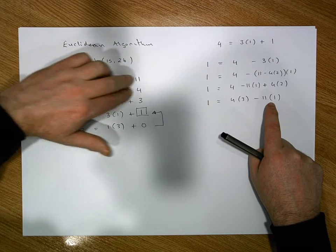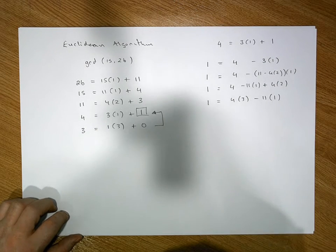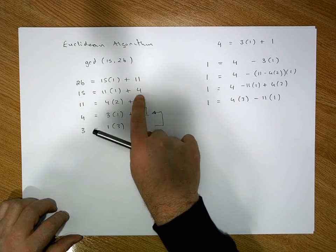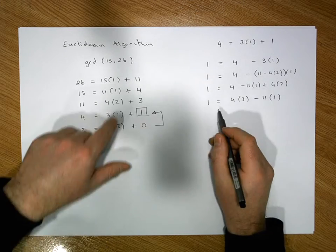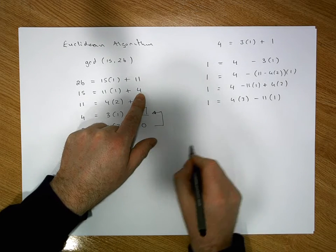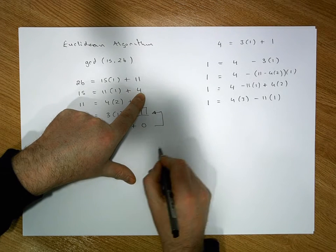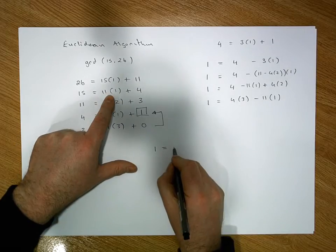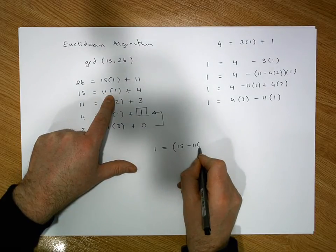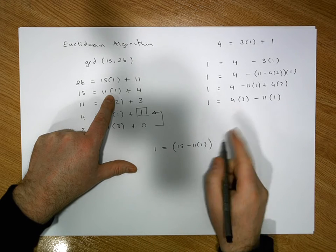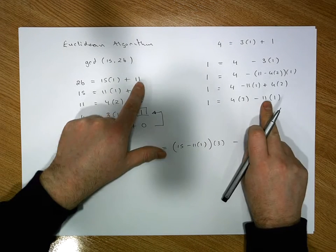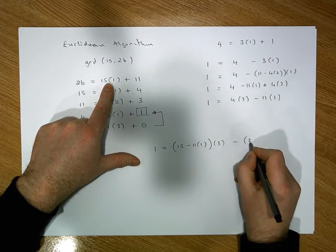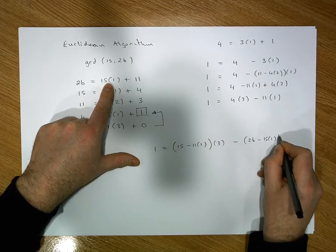What we do now is take our 4 and our 11 and back substitute — continually back substituting with respect to the remainders, not the quotients. That's important. So what's r4 equal to? r4 is 15 minus 11 times 1, so it must be 15 minus 11 times 1, times 3. And what's r11 equal to? r11 is equal to 26 minus 15 times 1.